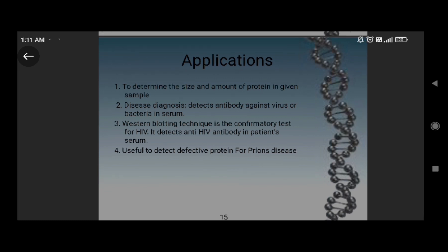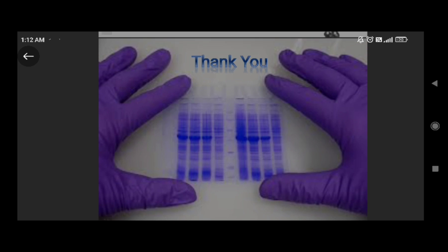The applications of western blotting include: determining the size and amount of protein in a given sample, detecting antibodies against viruses and bacteria in serum for diagnosis, and it is the confirmatory test for HIV, detecting anti-HIV antibodies in patient serum. It is also useful to detect defective proteins, such as in prion disease. Thank you so much for listening.